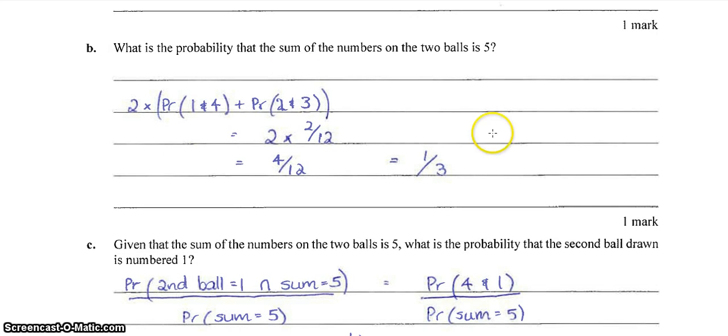Whereas the probability that the sum of the numbers on the two balls is 5, well, there's two ways that can happen. We can get a 1 and a 4 or a 2 and a 3. But taking into account that it could be 1 and 4 or 4 then 1, we just double that probability. So that gives us 2 on 12 times 2 is 4 on 12, which is 1 on 3. Don't forget to simplify your answers here or you won't get the mark.